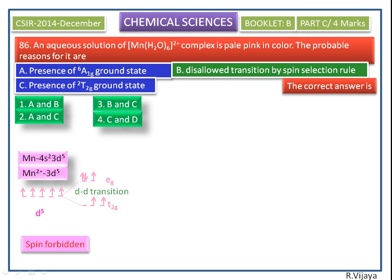The other options are about a term symbol. So we find the term symbol for d5. Here n is equal to 5, so the spin value will be 5 by 2. The spin multiplicity will be 6.